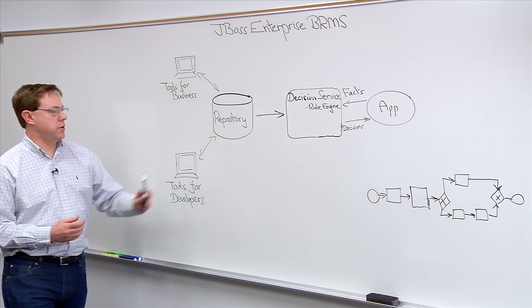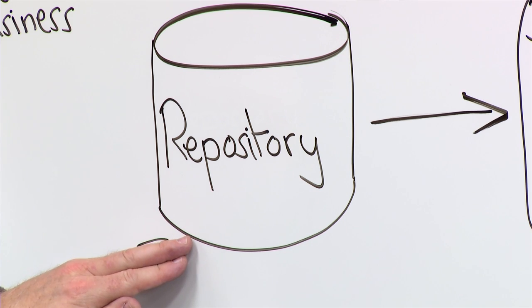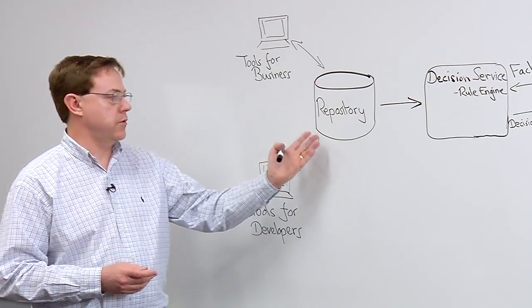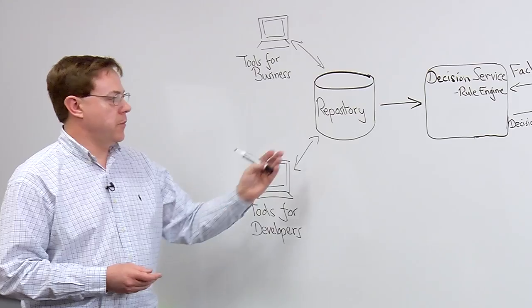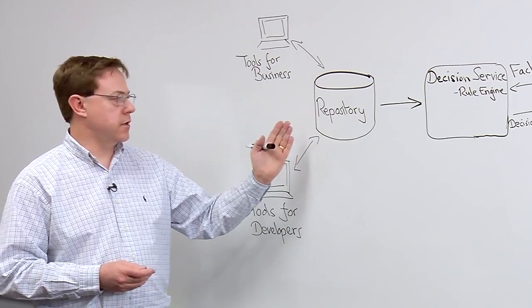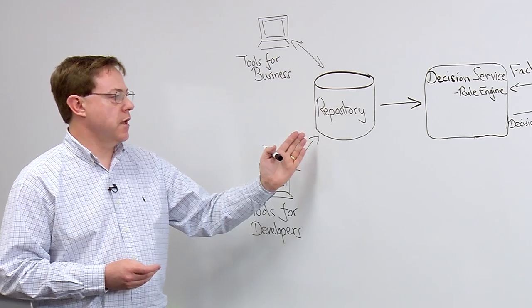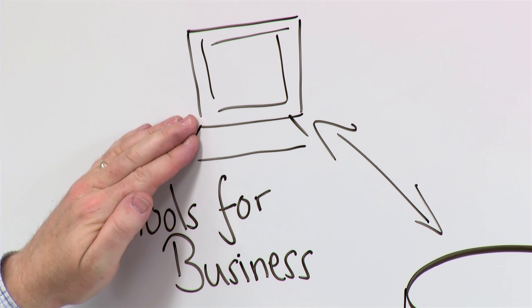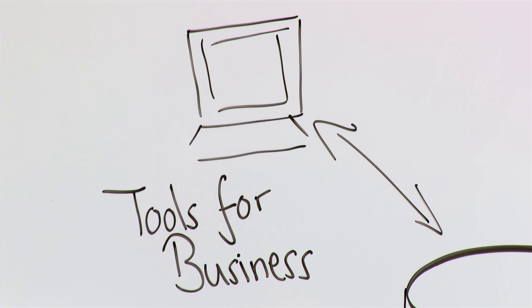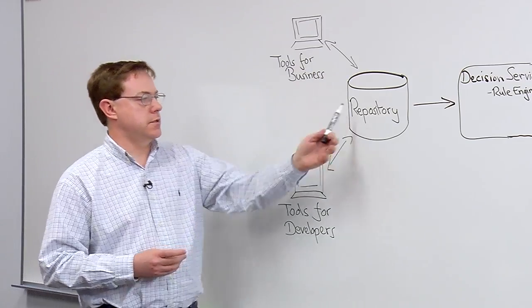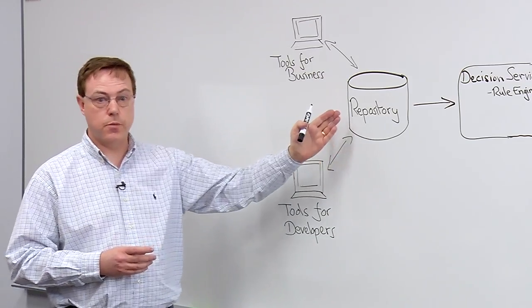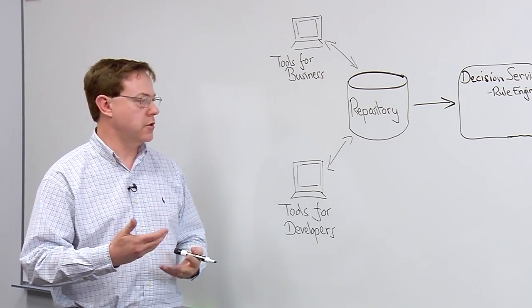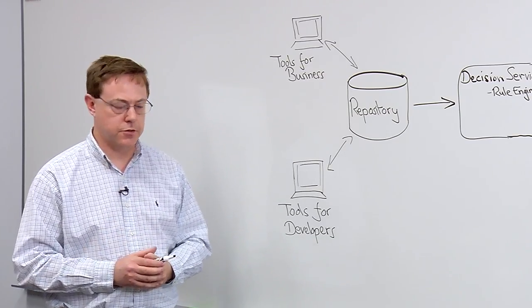It consists of four main components. First of all, we have a repository. The repository is the centralized storage location for business rules and other related definitions. It includes access controls and version control mechanisms to provide governance over the information stored there. We provide a web-based tool for business users to access and manipulate information in the repository — an intuitive interface that allows the business to directly look at and control the definitions.